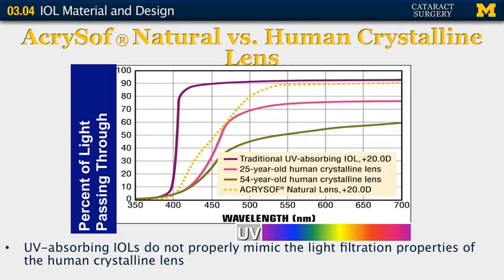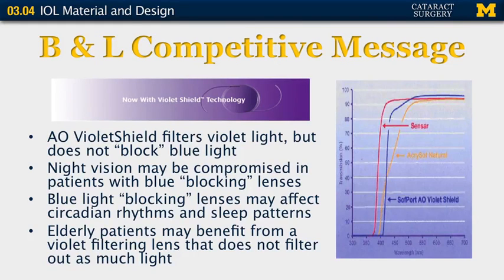The Alcon AcrySof Natural lens is designed to mimic the blue light filtering properties of a middle-aged human crystalline lens. Bausch & Lomb has a competitive message — they filter out the violet end of the spectrum. Their thoughts are that night vision is not as compromised when one blocks out the violet light rather than the blue. In addition, there have been studies indicating that perhaps blue light is important to our natural circadian rhythms and sleep patterns. We all know there are frequently complaints among the elderly about difficulties with sleep, and perhaps it is not beneficial to block out the blue light as a result.